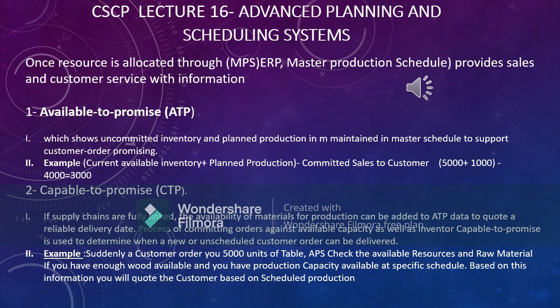The second information is Capable to Promise. Capable to Promise means that based on the availability of your production plants, your inventory on hand, and your raw materials, you can give a customer a schedule — quoting a future date by which, using your available inventory, raw materials, production capacities, and human resources, you can commit to delivering their order.